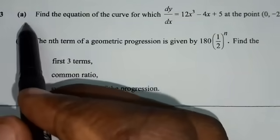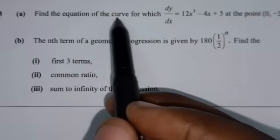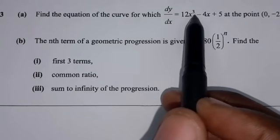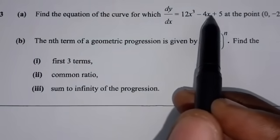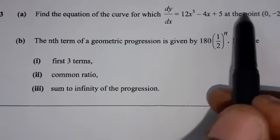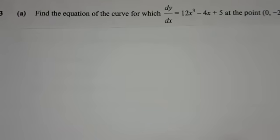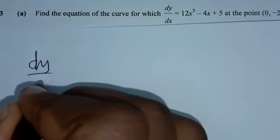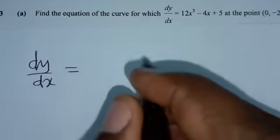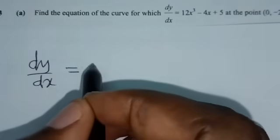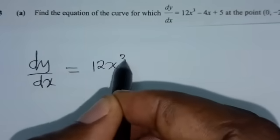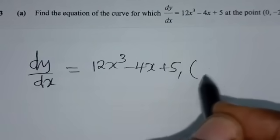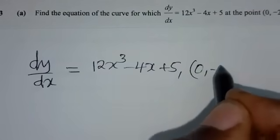Question 3a: Find the equation of the curve for which dy/dx is equal to 12x cubed minus 4x plus 5, at the point (0, negative 2).